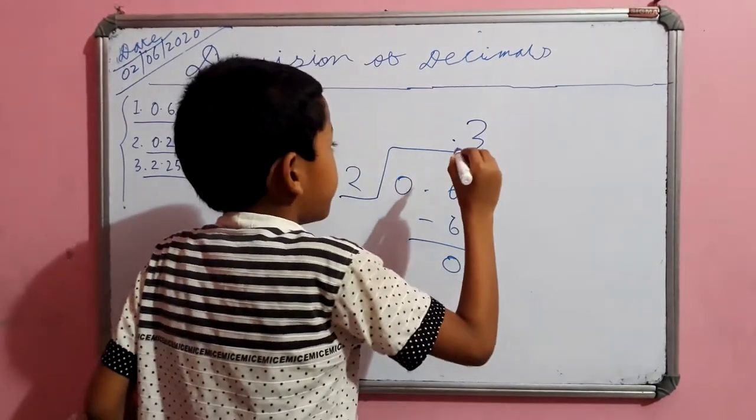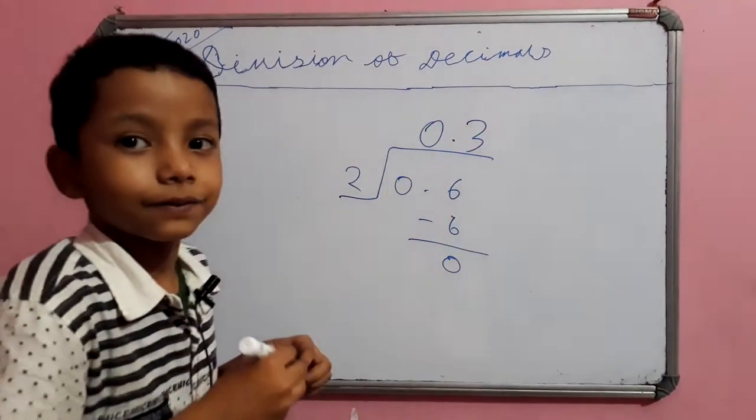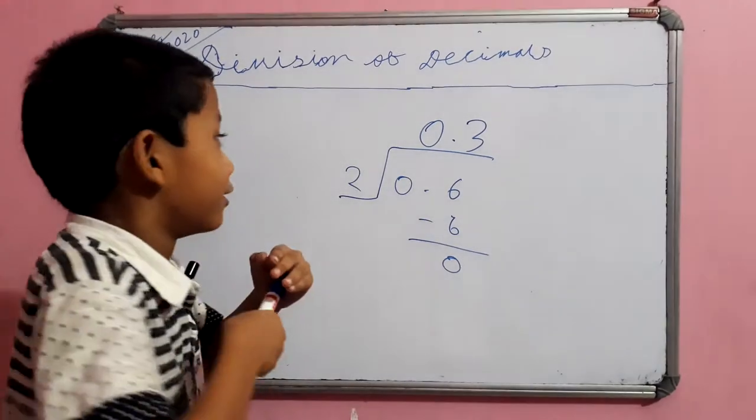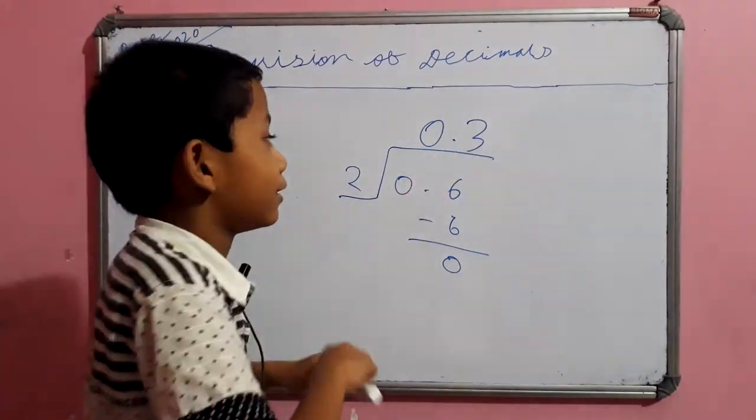But we can put a decimal number here and 0 put here. Here we go. So our answer is 0.3.